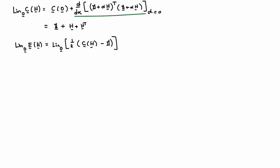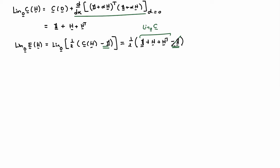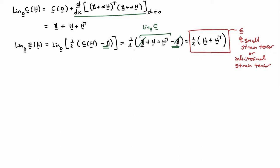If we want to linearize the Green strain, we linearize one-half (C minus identity). That gives us one-half times (identity plus H plus H-transpose) minus identity. The identity terms cancel, leaving one-half (H plus H-transpose). This quantity comes up quite a bit. We call it little epsilon, and it's known as the small strain tensor or, alternately, the infinitesimal strain tensor.